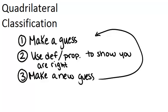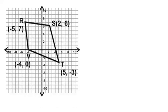So let's look at how this might play out. Here we have a picture of a quadrilateral. It's clearly a quadrilateral because it has four sides. And the question is, what type of quadrilateral is this? The guess that I'm going to make is a kite because I think it looks like a kite.